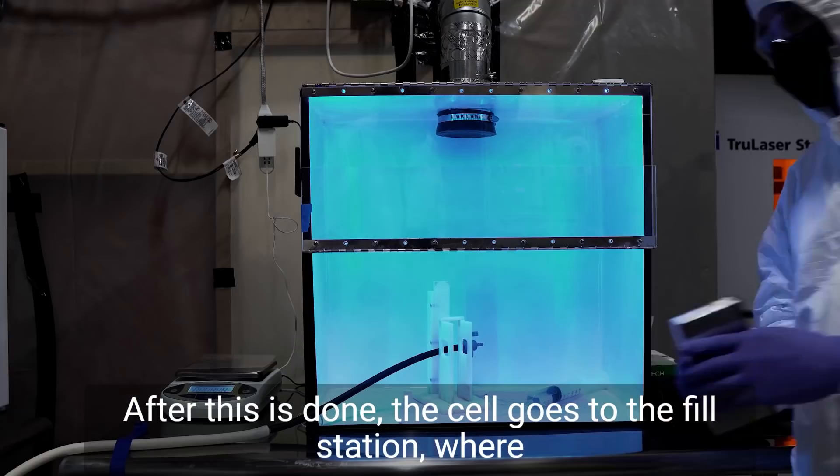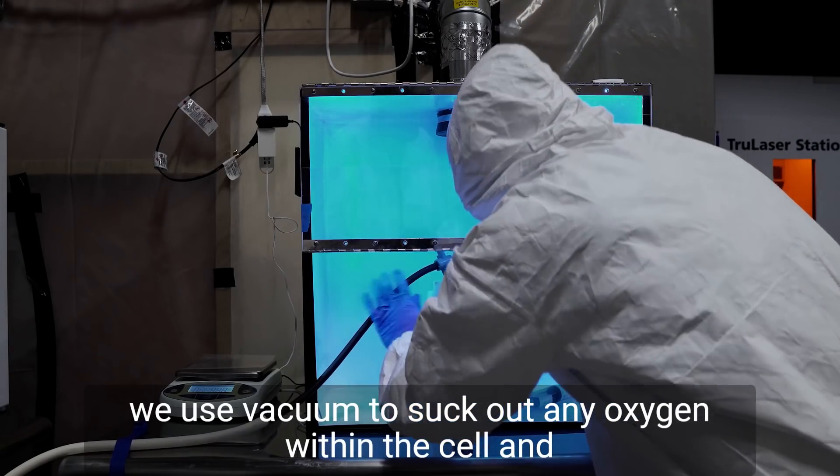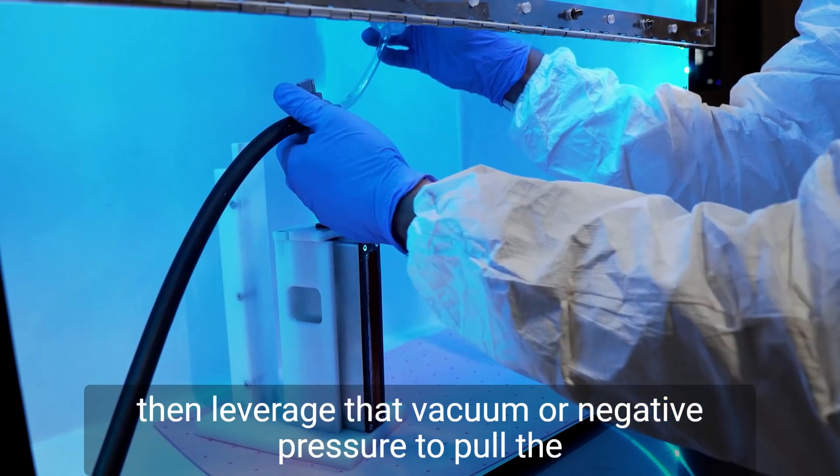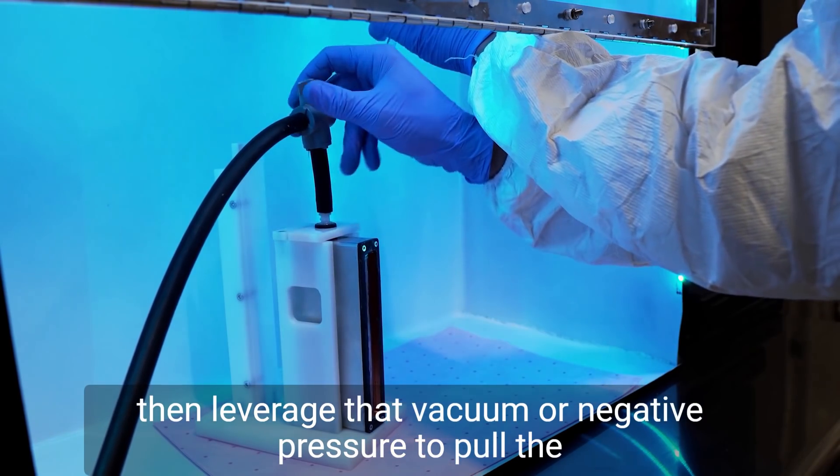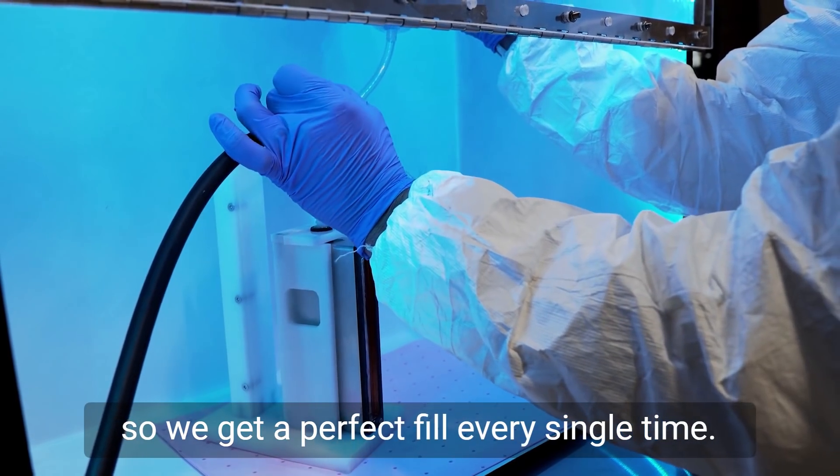After this is done, the cell goes to the fill station where we use vacuum to suck out any oxygen within the cell and then leverage that vacuum or negative pressure to pull the electrolyte into the cell so we get a perfect fill every single time.